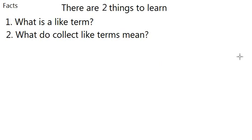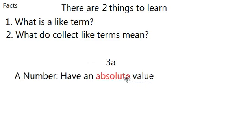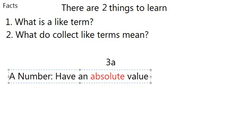A like term is two terms that have the same variable. Let's look at an example: 3A. This is a term. But what makes a term? We can see there is a 3 right there, which is a number. It has an absolute value.